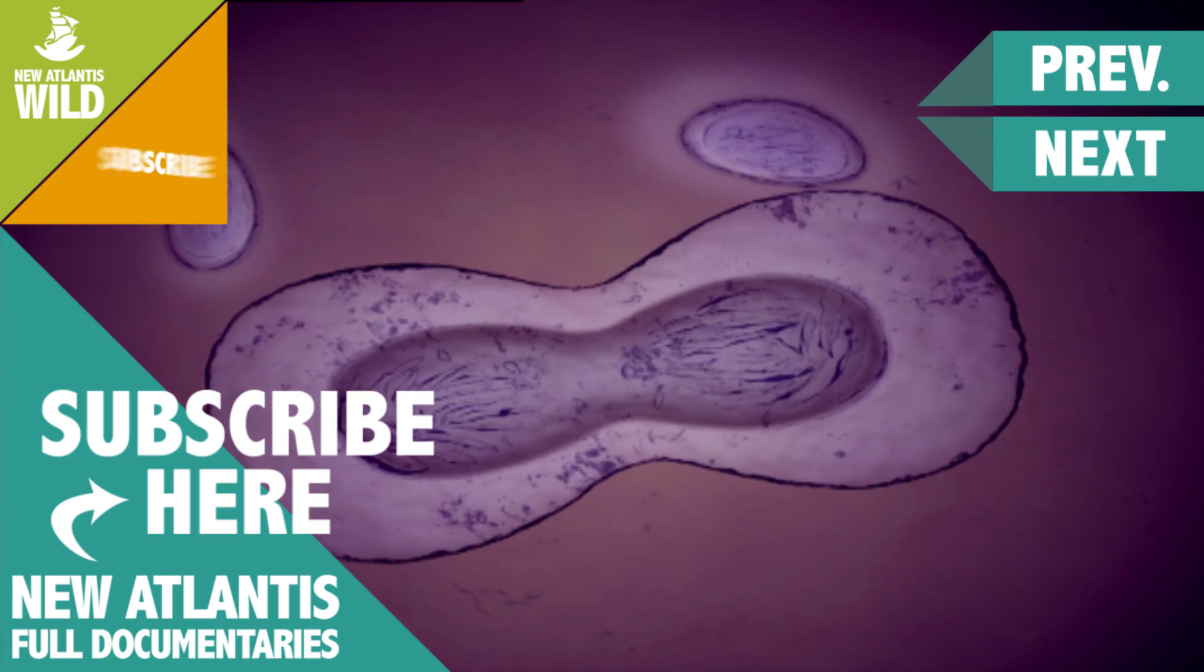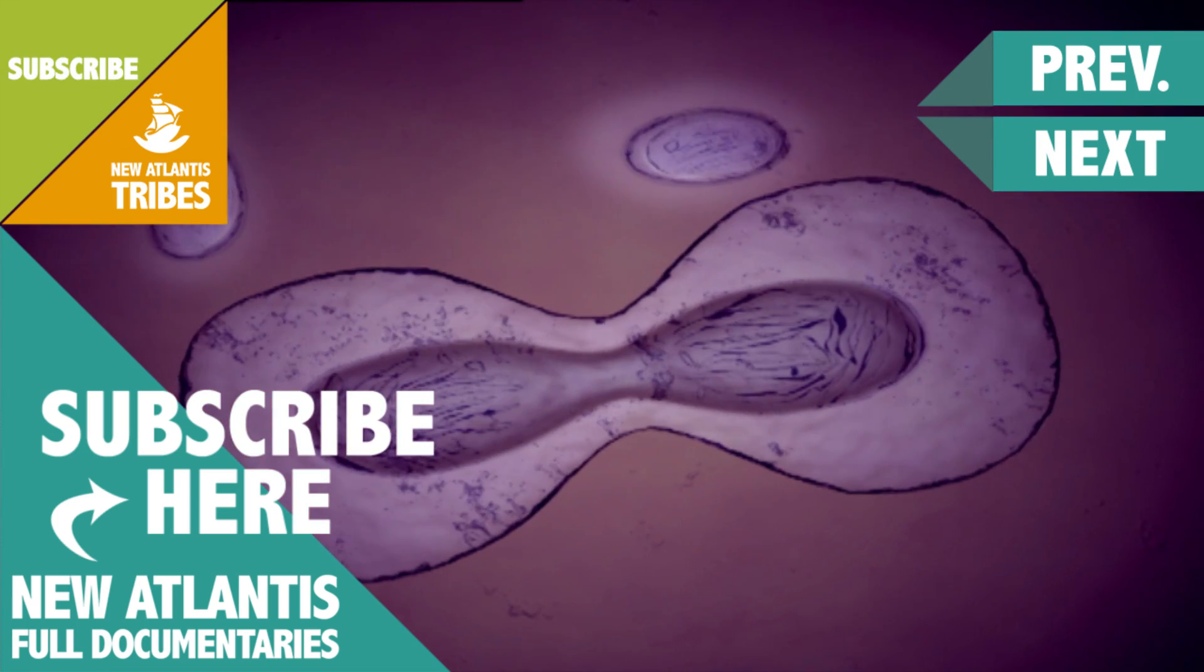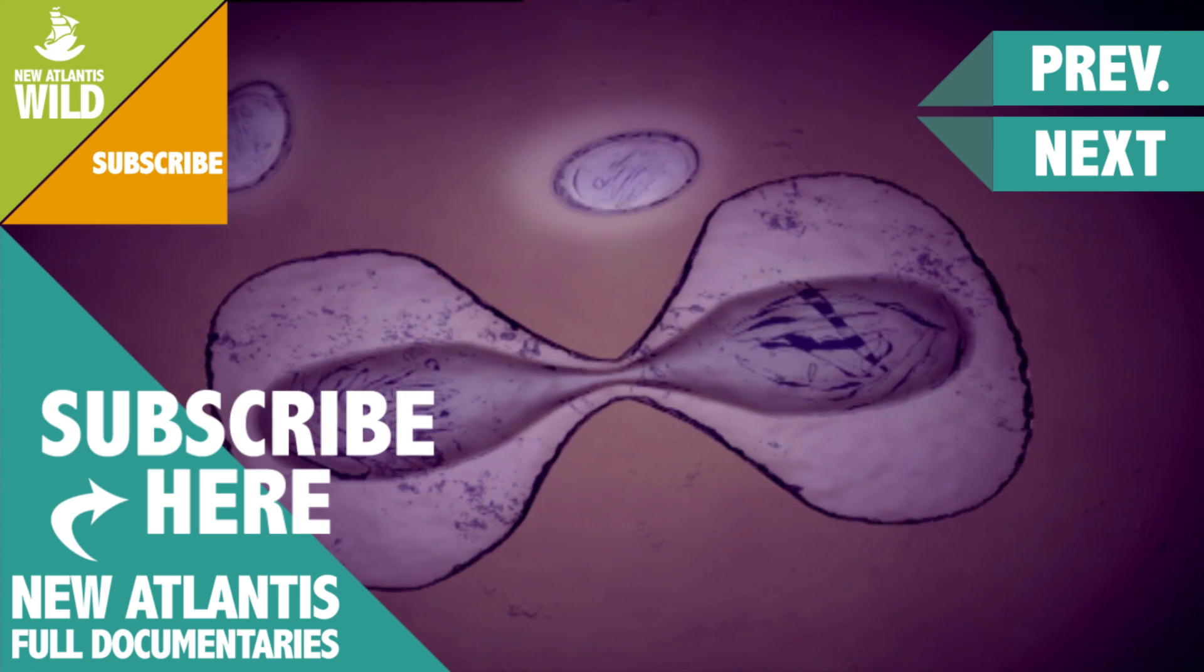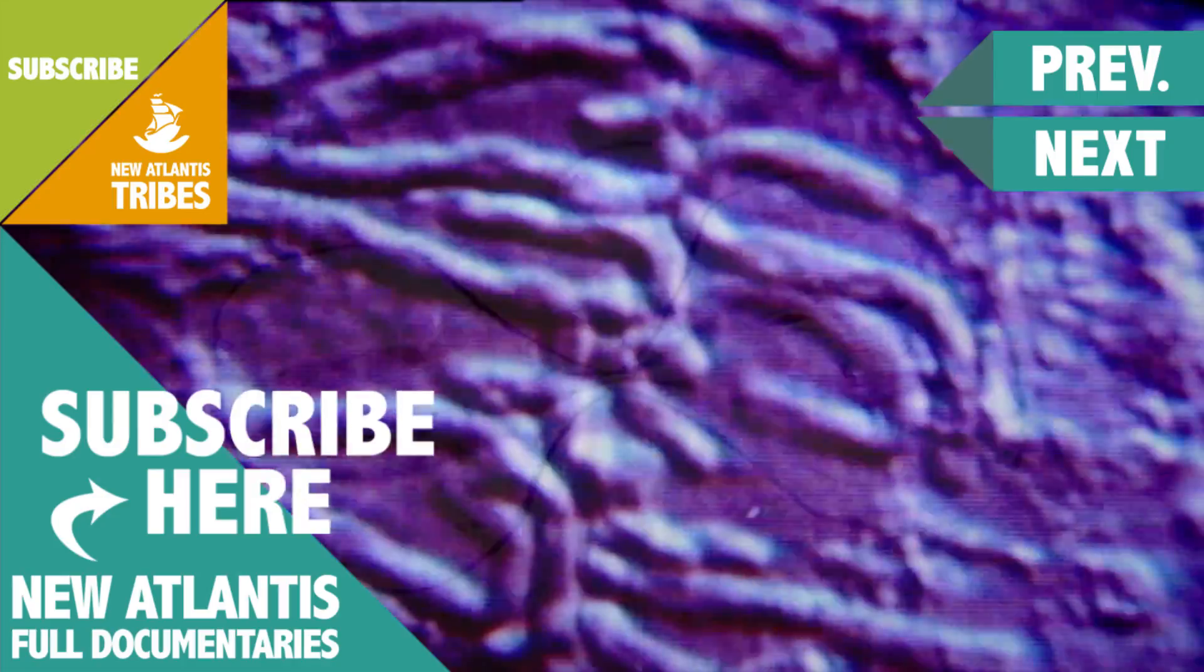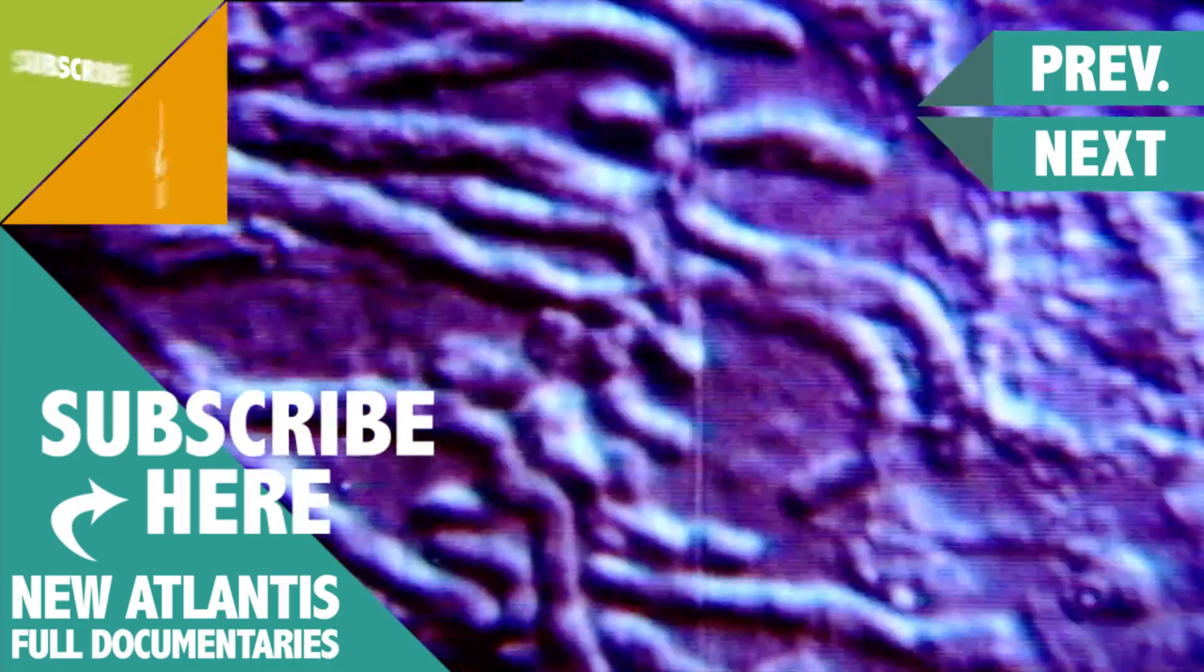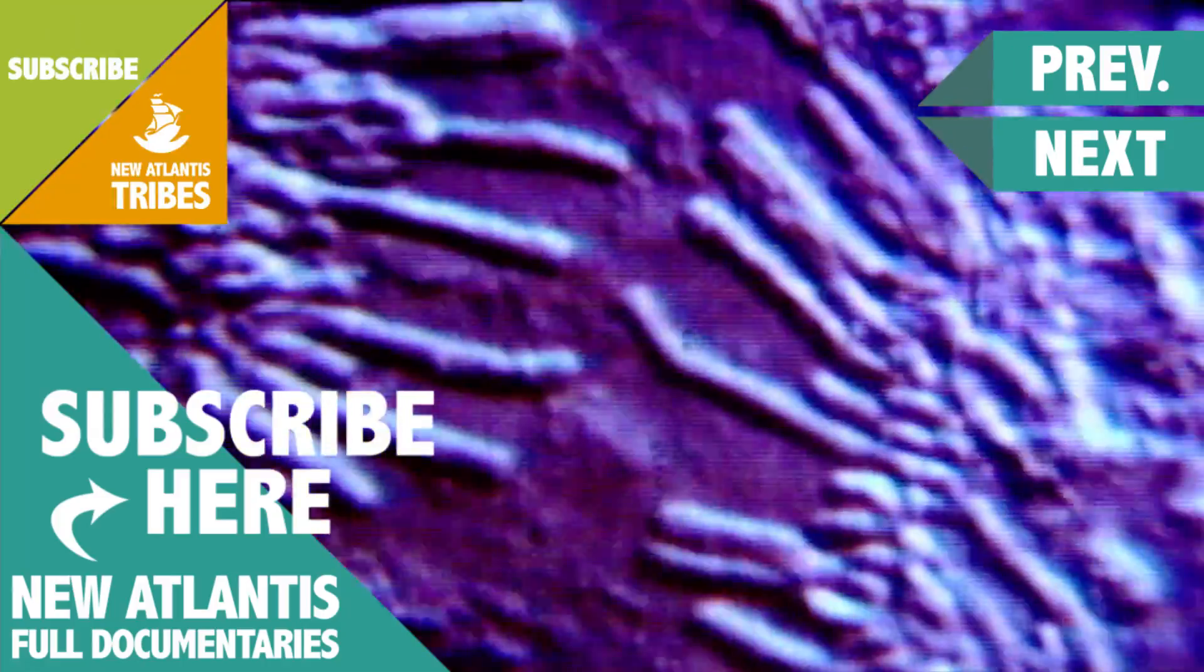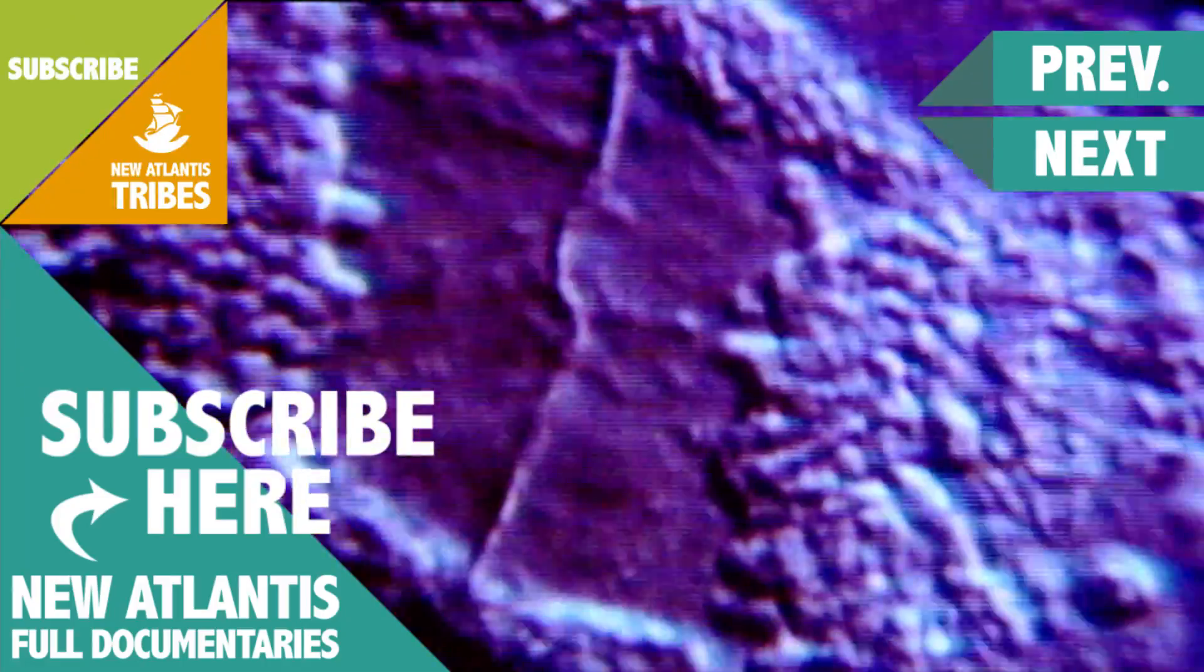Until this moment, the unicellular beings that inhabited the planet multiplied by dividing in two. This process is known as bipartition and consists of a simple duplication of DNA. The resulting individuals are identical to the originals, unless some error occurs during the process, giving rise to what is known as genetic mutations.